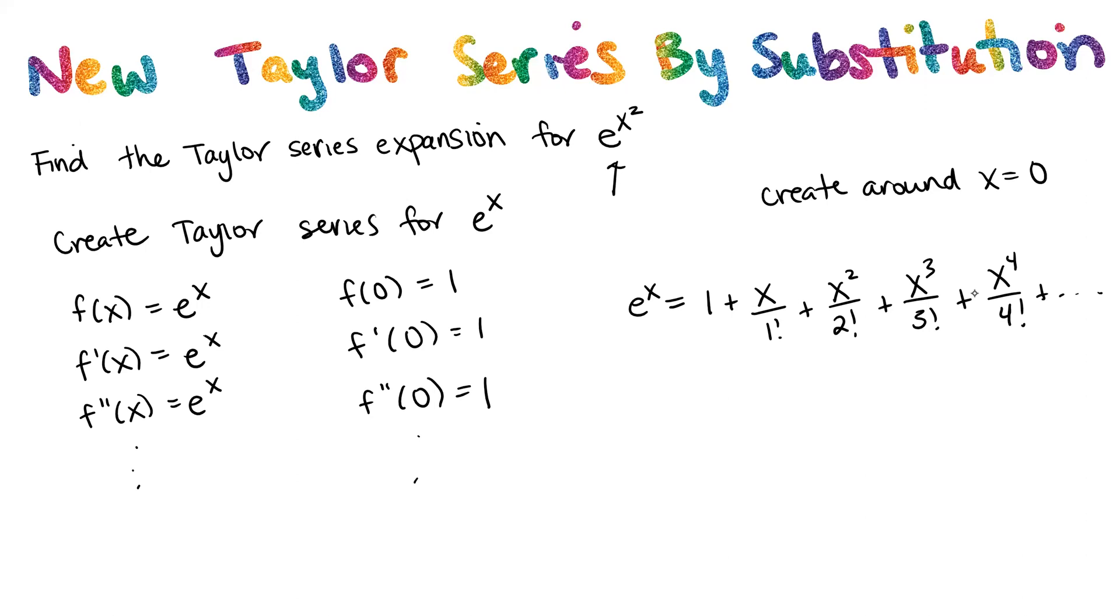And to find the Taylor series expansion for e to the x squared, what we're going to do is look at this Taylor series here, and anywhere we see an x, we're going to write in x squared instead. So then that means that e to the x squared is equal to 1 plus x squared plus x to the 4 over 2 factorial plus x to the 6 over 3 factorial plus x to the 8 over 4 factorial, and so on.